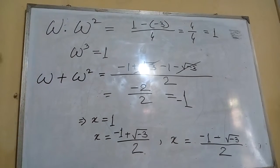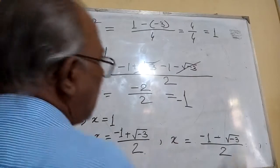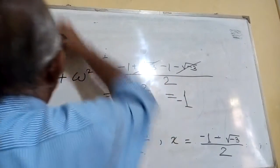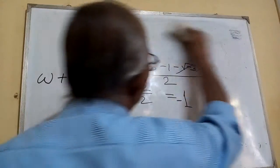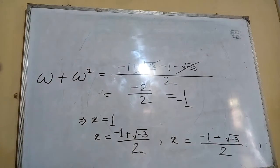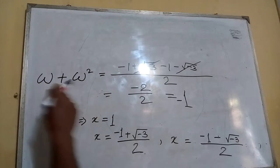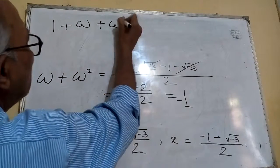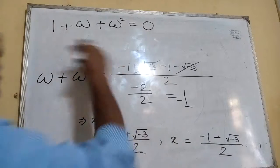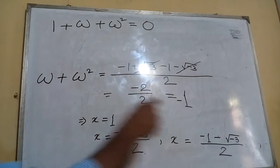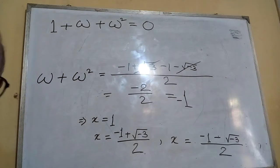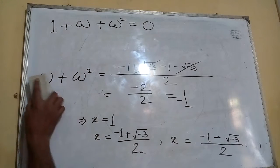So from here, what we can learn: there are three cube roots of unity. One is the arithmetical cube root, that is one. Another is omega, and the third is omega square. From here we are getting one plus omega plus omega square equals to zero. So this relationship we have to remember — either you can say omega plus omega square equals to minus one, or remember: one plus omega plus omega square equals to zero.